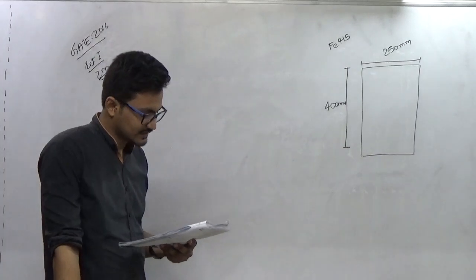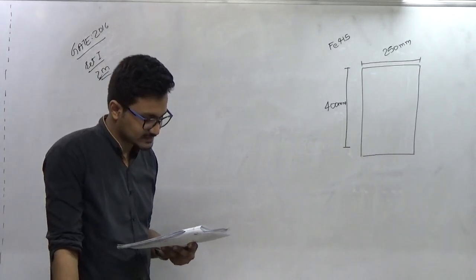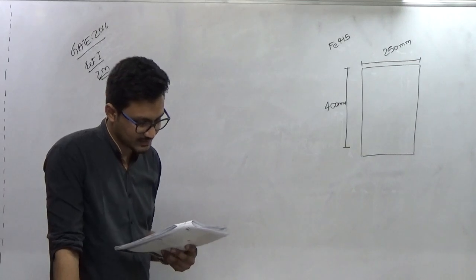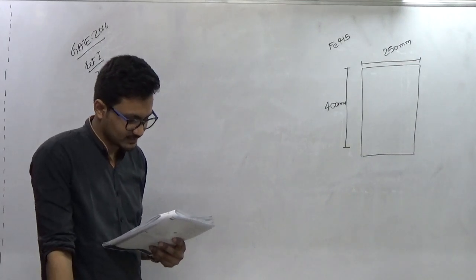As per the provisions of IS 456-2000, the minimum and maximum amount of tensile reinforcement expressed in millimeter square for the section are respectively: